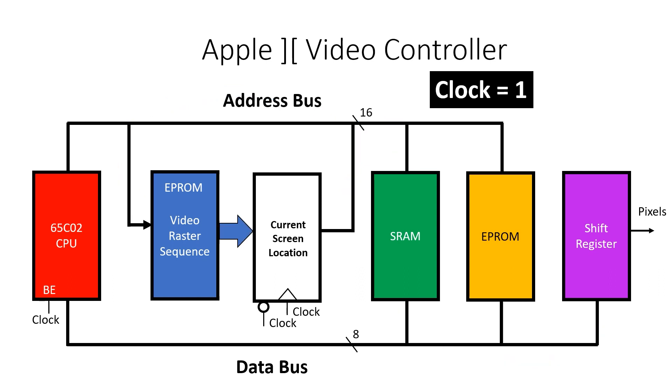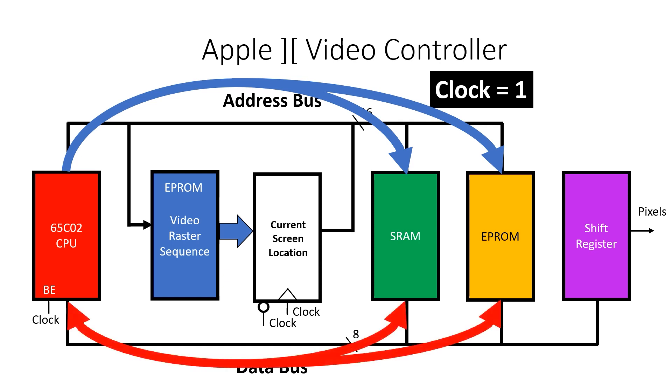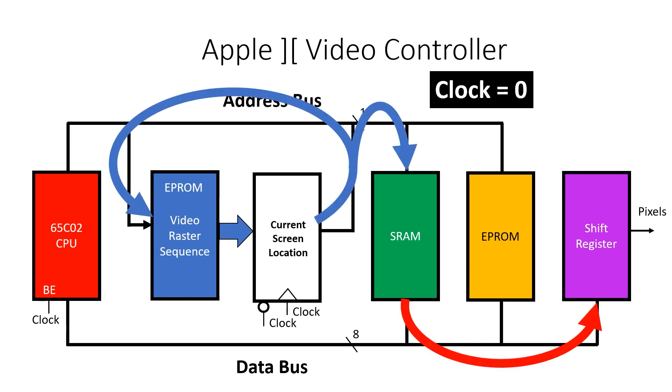Now, when clock's high, the 6502 has control of the address bus, and it can either read from or write to the memory system. Clock goes low, and the cycle repeats.